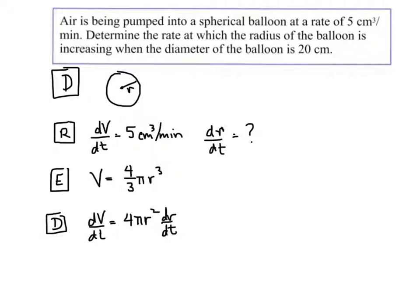And the last thing we do is substitute and solve. So I know dv dt is 5. Now, they've told me that the diameter is 20. That just means, of course, that the radius is 10. So I'll plug that in for r. So 10 squared dr dt.